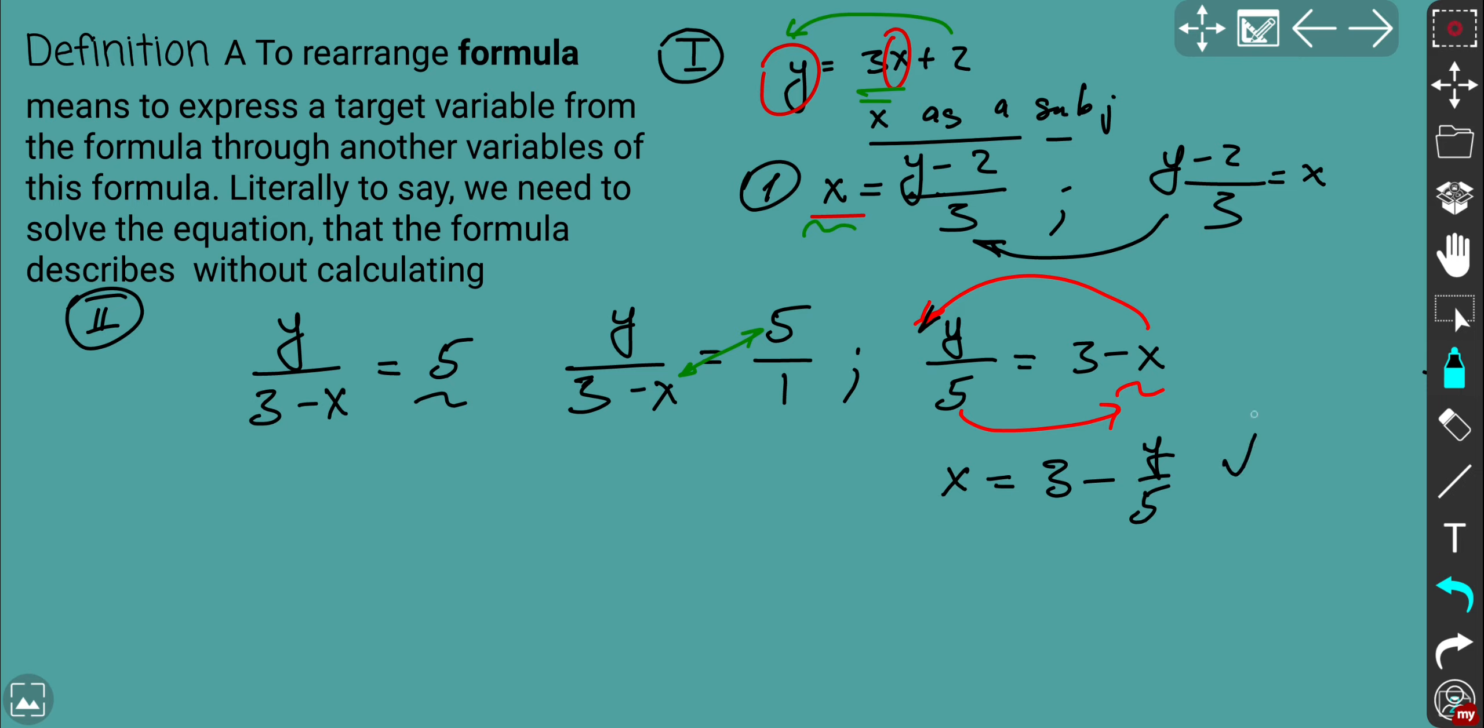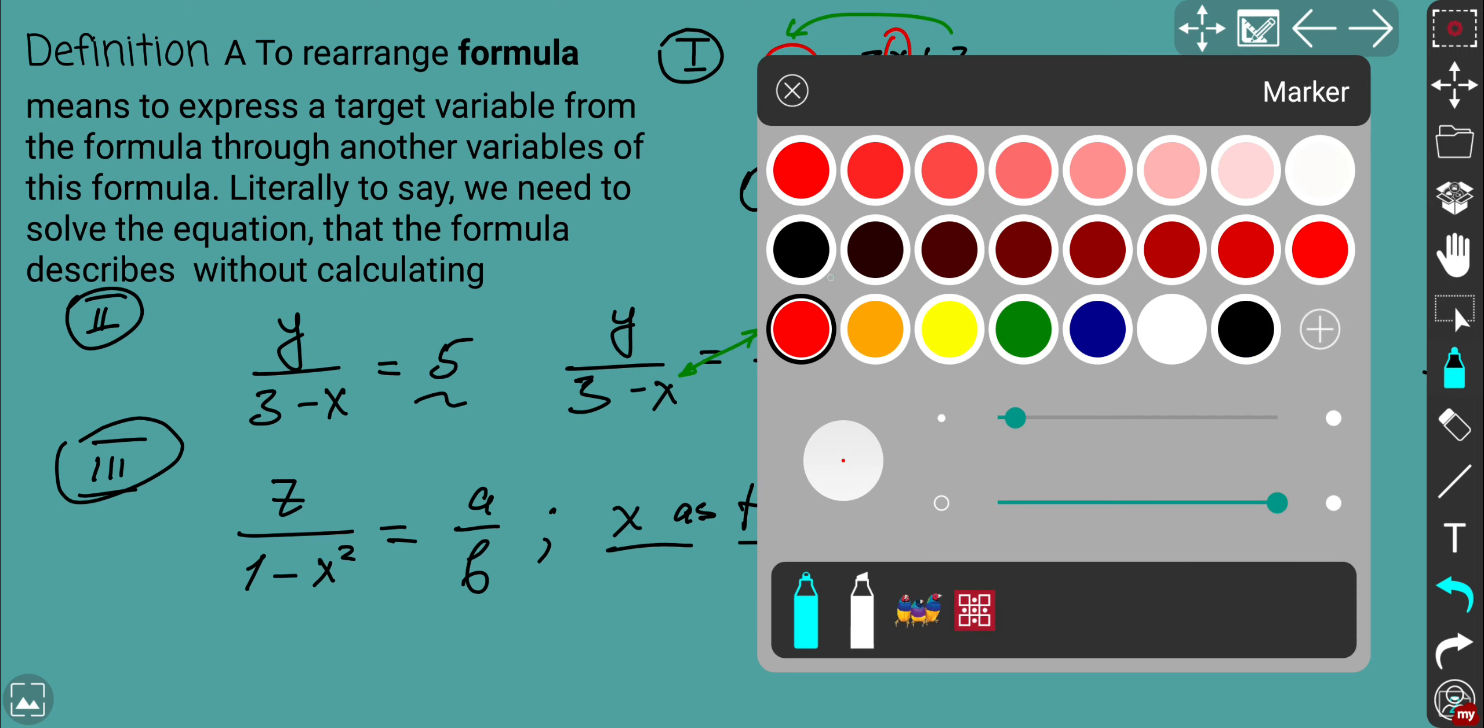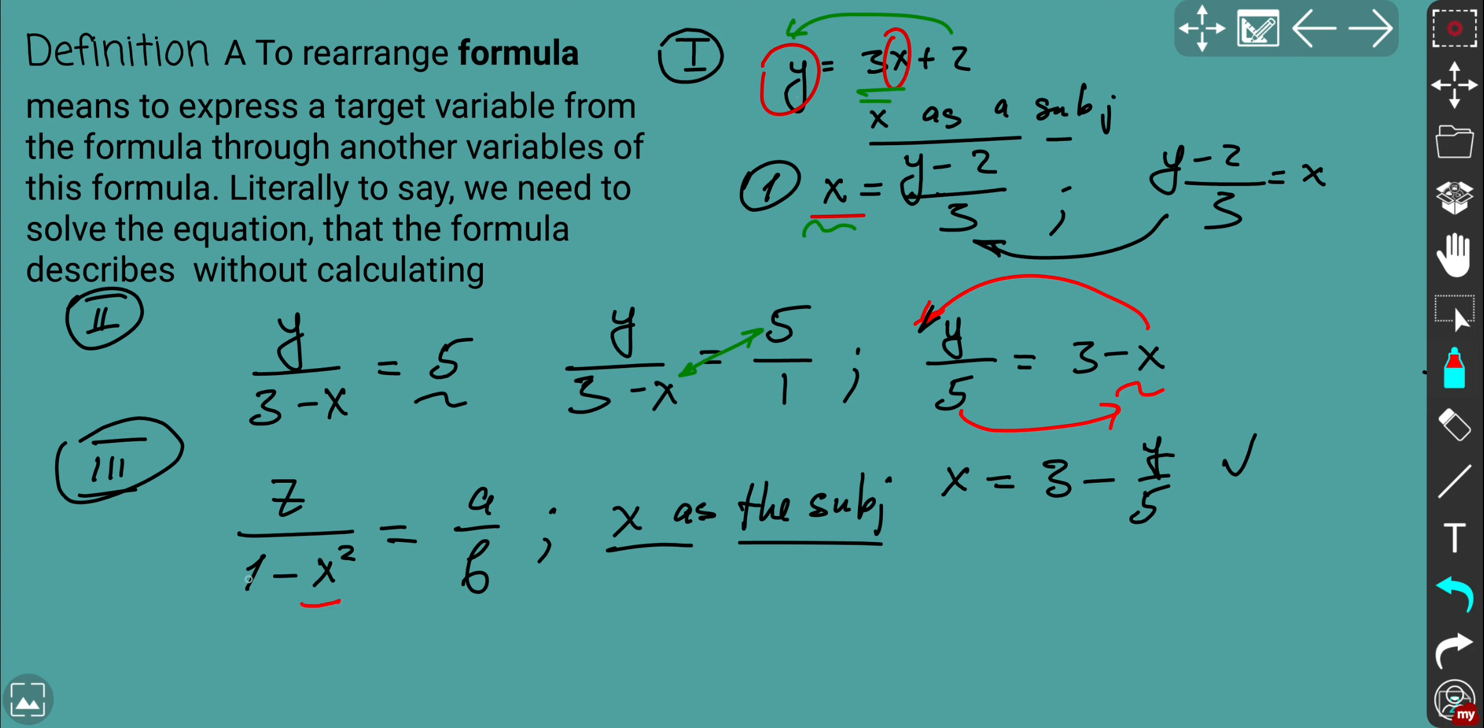What about more complicated involving different powers, different roots? Let's consider this one. When you have the power, let's say z over 1 minus x squared is equal to a over b. So here we've got 1, 2, 3, 4 variables. You need to express x, make x as the subject. So let's try to do this. You have power, so you need to detect where is your target variable. It's right there. But you cannot split and separate from 1, right? So first of all, you consider the whole expression as target.